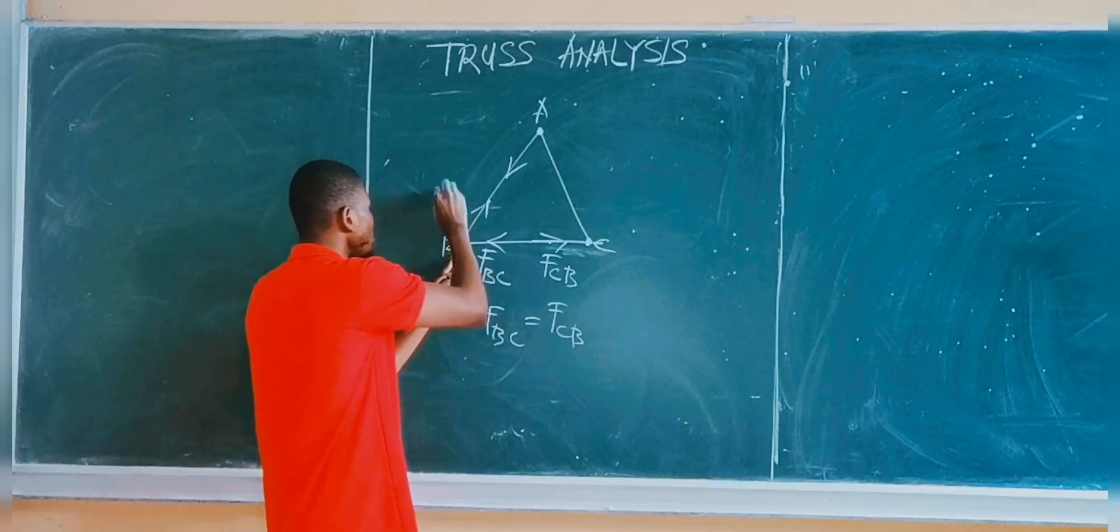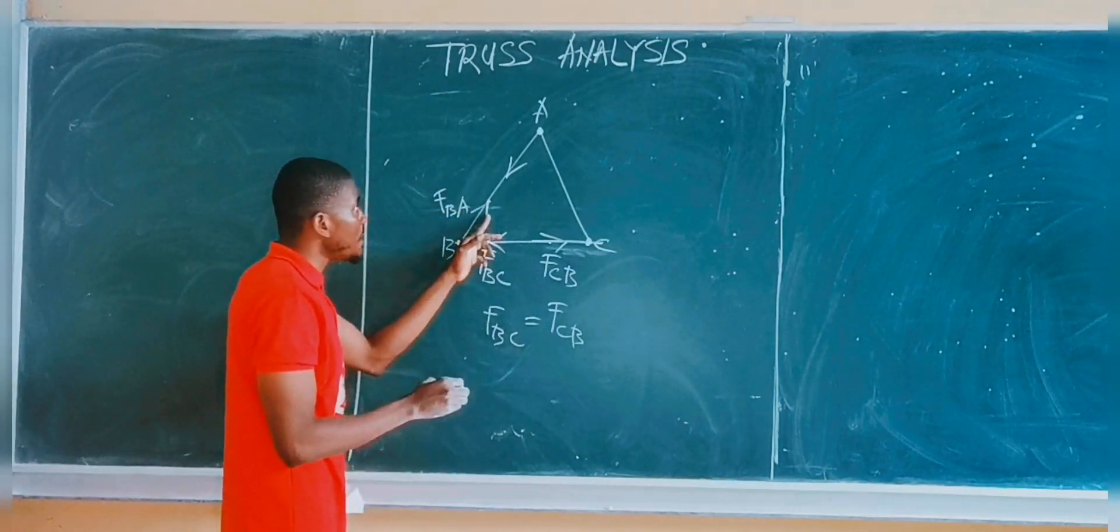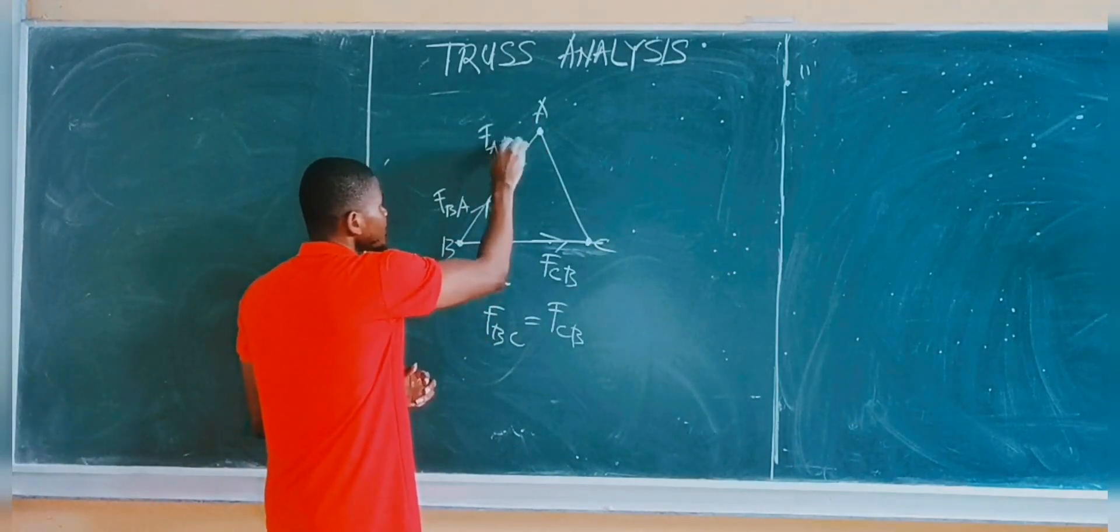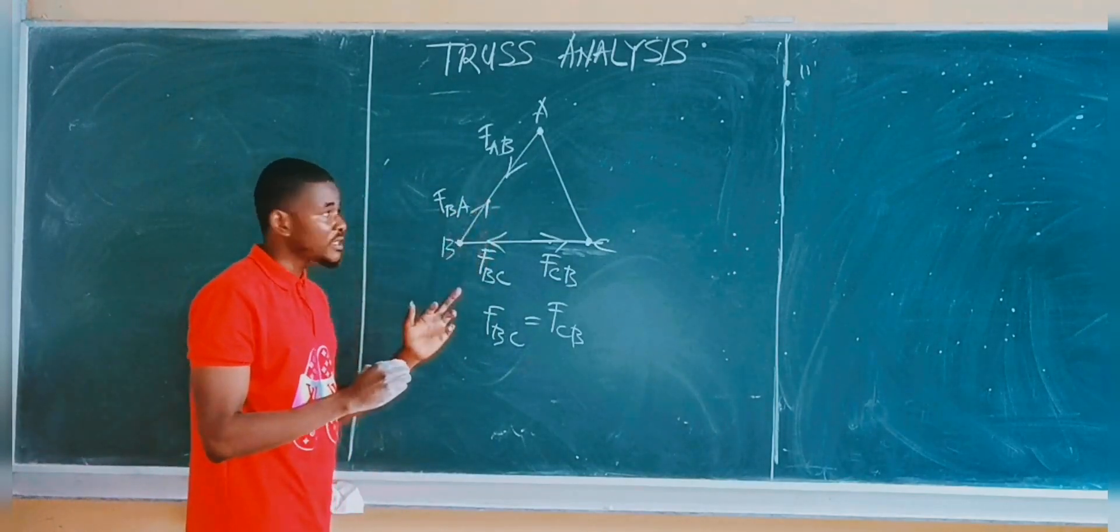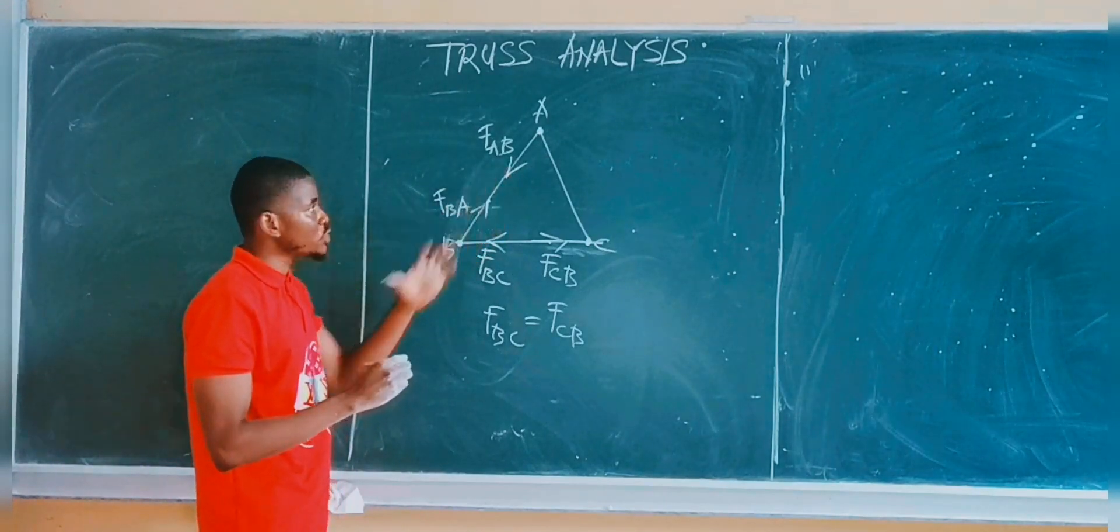The force at this point is simply called the force at joint B relative to joint A. Meanwhile, the force at joint A is the same since they are equal in magnitude. So the two forces are the same.